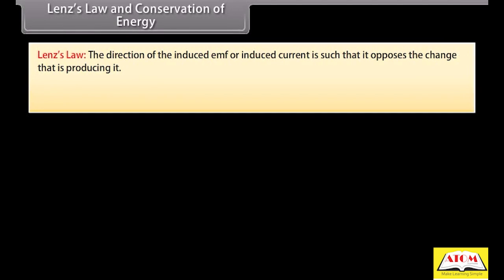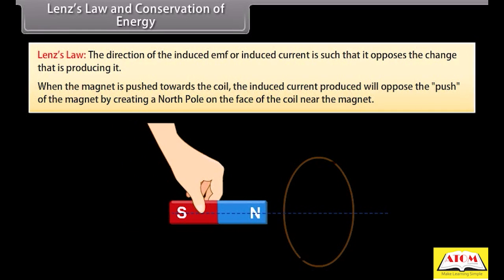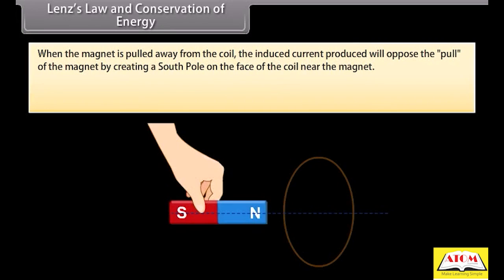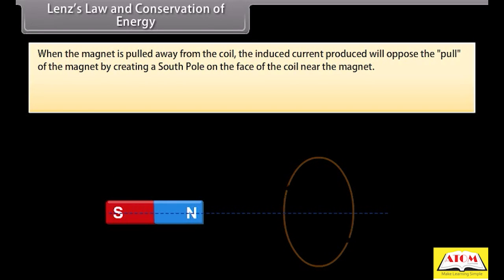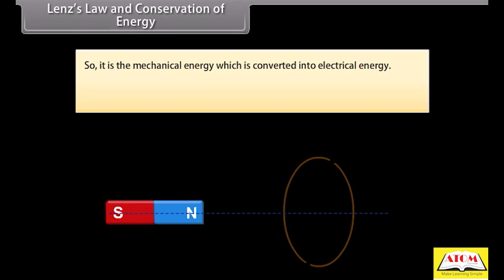Lenz's law and conservation of energy. Lenz's law states that the direction of the induced EMF or induced current is such that it opposes the change that is producing it. When the magnet is pushed towards the coil, the induced current opposes the push by creating a north pole on the face of the coil near the magnet. The induced EMF opposes the change that produces it. We perform mechanical work in causing the change in magnetic flux, so mechanical energy is converted into electrical energy. Thus Lenz's law is in accordance with the law of conservation of energy.